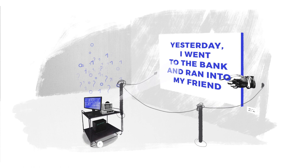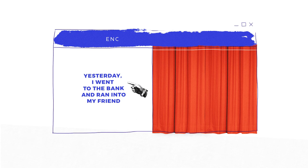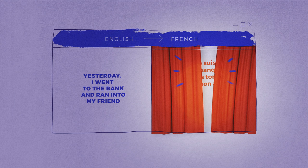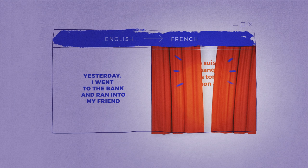Yet as of now, if you pop that same example into a standard online translation engine and translate it to French, out comes this semantically accurate bad boy: 'Hier, je suis allé à la banque et suis tombé sur mon ami.' C'est parfait!